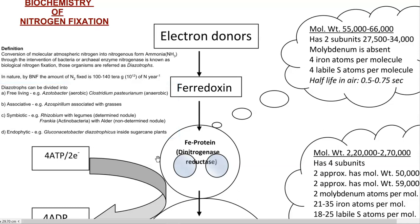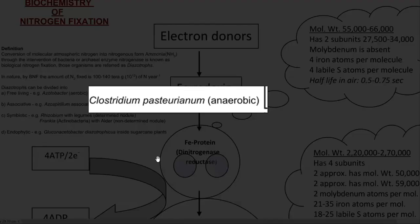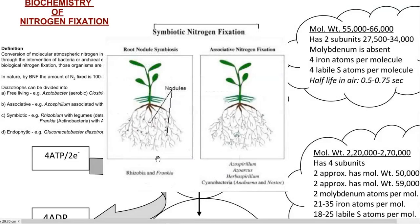Free-living means they live in the environment freely and are not associated with any other organism. Aerobic free-living examples include Acetobacter, and an anaerobic free-living nitrogen-fixing bacteria example is Clostridium pasteurianum. Associative symbiotic nitrogen fixers have an association with other systems, for example with the plant system. An example here is Azospirillum, which is commonly found associated with grasses.